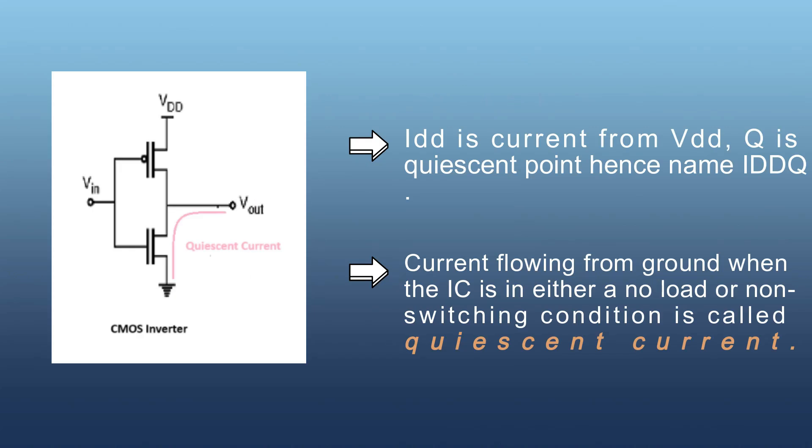Here, we have a figure of CMOS inverter. VIN is the input signal and VOUT is the output. IDD is the current from VDD supply. Q is the quiescent point, hence the name IDDQ. Current flowing from ground when the IC is in either a no-load condition or non-switching condition is called quiescent current.